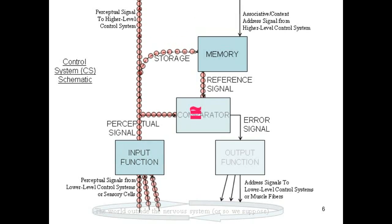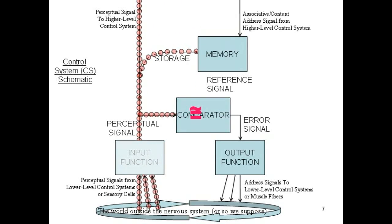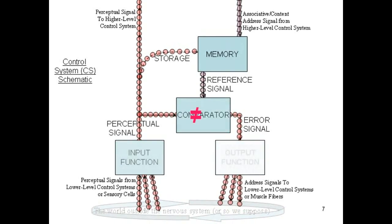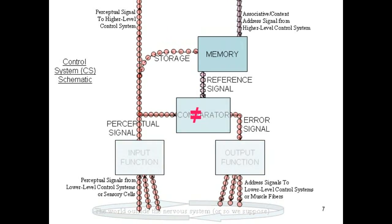Note that even though the comparator of the CS is satisfied, the comparator of a higher-level CS may not be satisfied with its perceptions. So it may send down a different address signal, altering or restarting the process here at this level. So from this we see that each CS uses CSs below it to control its perception, and in turn is similarly used by the CSs above it.